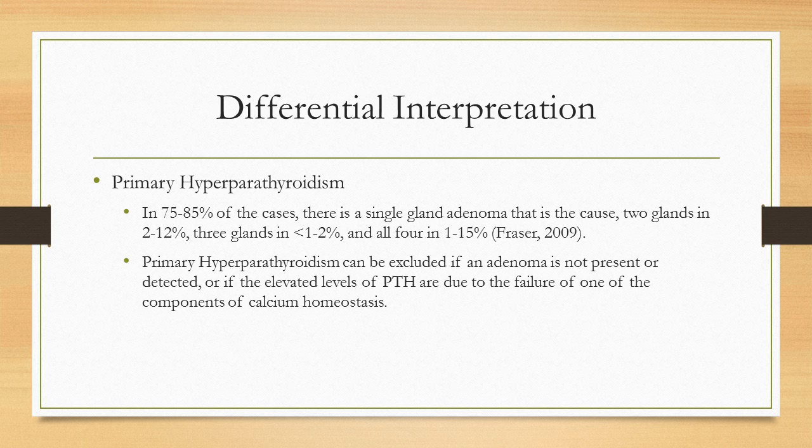Next we'll move on to the differential interpretation. The first and most likely differential is primary hyperparathyroidism. In 75 to 85 percent of cases there is a single-gland adenoma as the cause, two glands in 2 to 12 percent, three glands in less than 1 to 2 percent, and all four glands in about 1 to 15 percent of cases. Primary hyperparathyroidism can be excluded if an adenoma is not present or detected, or if elevated levels of parathyroid hormone are due to failure of a component of calcium homeostasis.